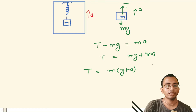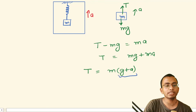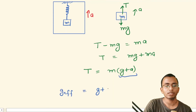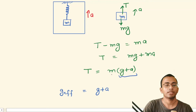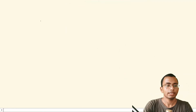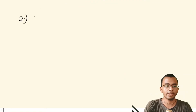This T is our weight when the lift is moving up. We can say that effectively g is becoming g plus a, so g effective equals g plus a. Therefore, the weight is m times g effective. Second case: when the lift is moving down with acceleration a.